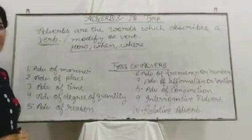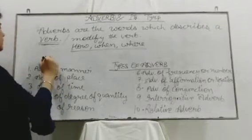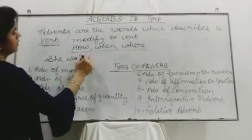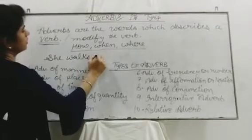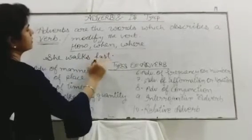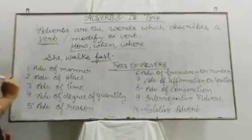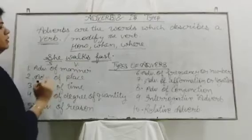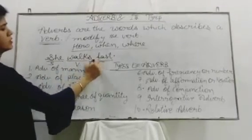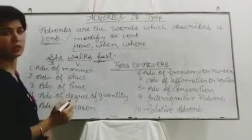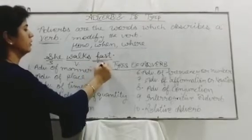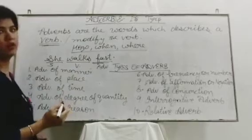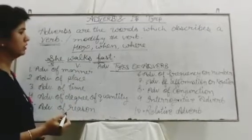Let me give you an example: 'She walks fast.' Here, 'she' is the subject, 'walks' is the verb, and 'fast' is the adverb. It's giving the answer of how — how does she walk?